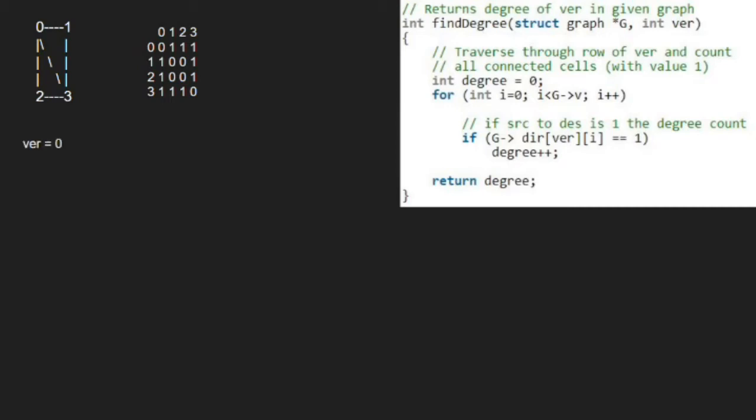Next, we take a degree variable which will store the value of degree. We initialize it to 0.